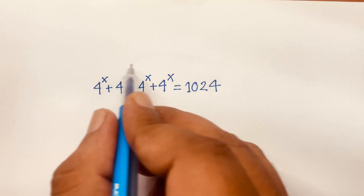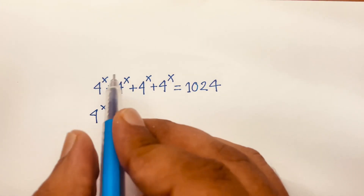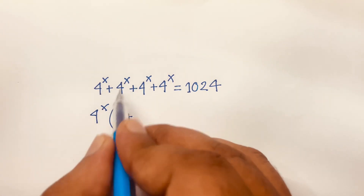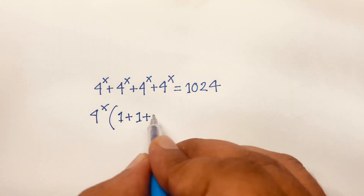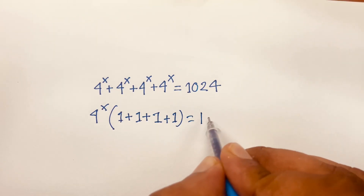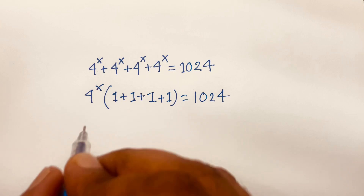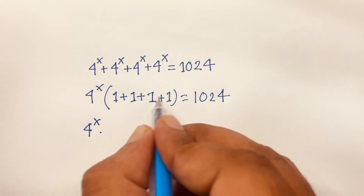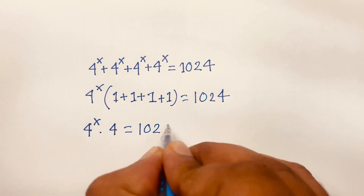First, 4 to the power x is common. Factoring it out, we get 4 to the power x times 1 plus 1 plus 1 plus 1, which equals 4, and that equals 1024.